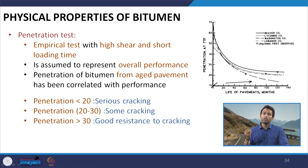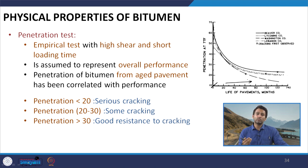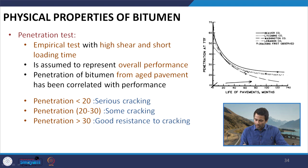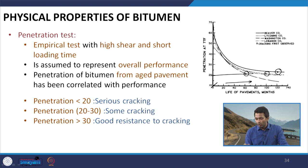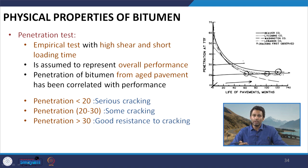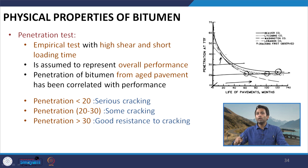After the bitumen was laid in the field, at different periods they collected samples and measured the penetration. As the bitumen ages, it stiffens and penetration will be lower compared to the initial value. They marked the location where cracking initiated, and this graph shows that typically when penetration drops below 20, more cracking starts occurring in the pavement.